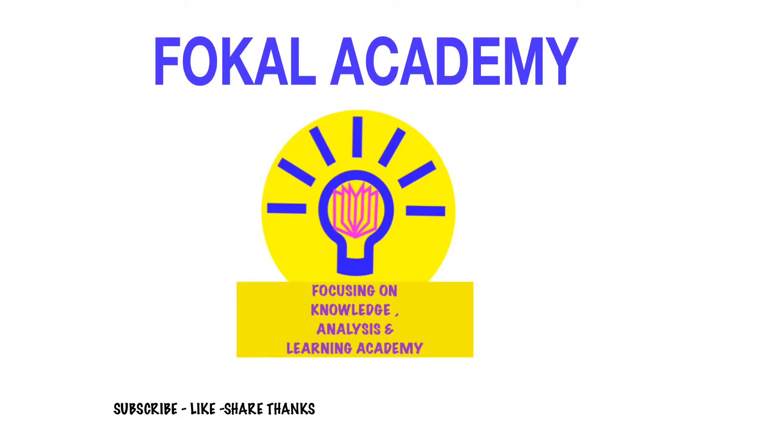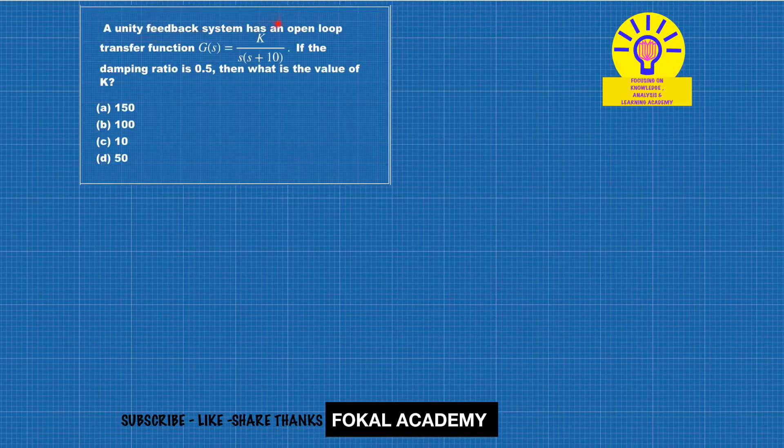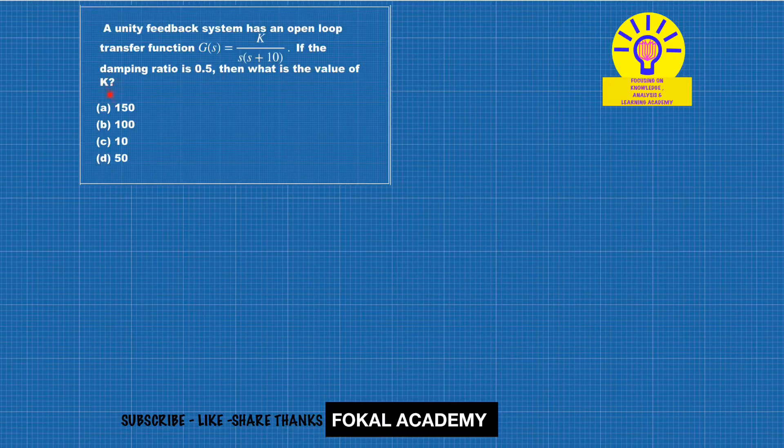Come to the problem. In this problem, a unity feedback system is given having the open loop transfer function G(s) = k/(s(s+10)). If the damping ratio is 0.5, then what is the value of k? This is the question, so read the question carefully.